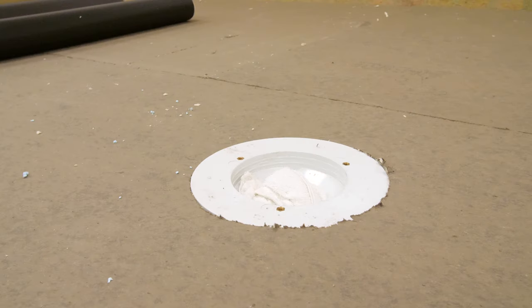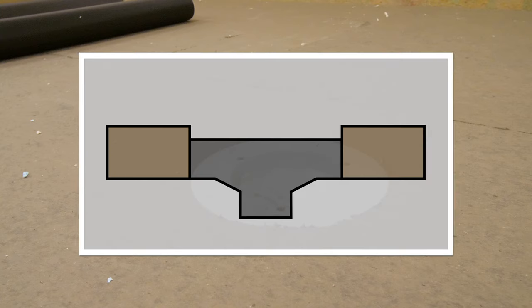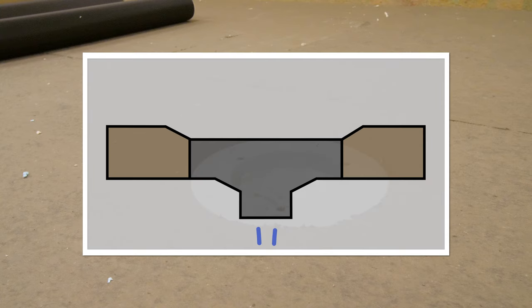The drain bowl should sit flush or slightly recessed from the top of the roof surface. If the insulation extends above the edge of the drain bowl, it must be tapered to provide a smooth transition into the drain.